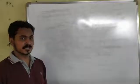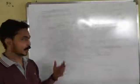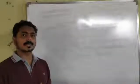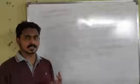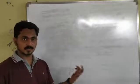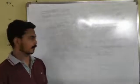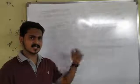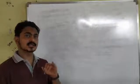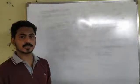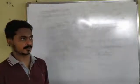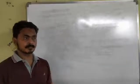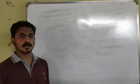Plus One Chemistry, Chapter 7: Equilibrium. This is the Equilibrium chapter from NCERT. The chapter covers chemical equilibrium, and the most important topics include solubility and solubility products. This chapter is very important for entrance exams and public exams.